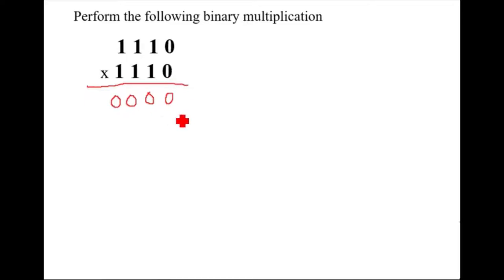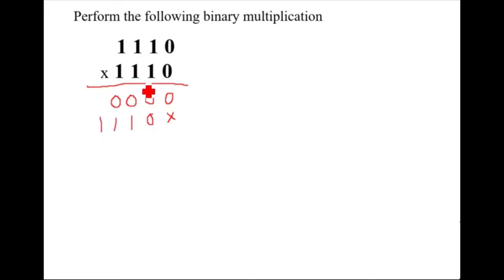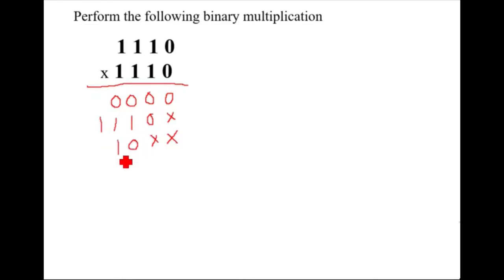Now leave this position. For the next one, this bit will be multiplied, so it will make the same number: one, one, one, and one more one. For the next bit, you need to leave two positions, and again it will make zero, one.